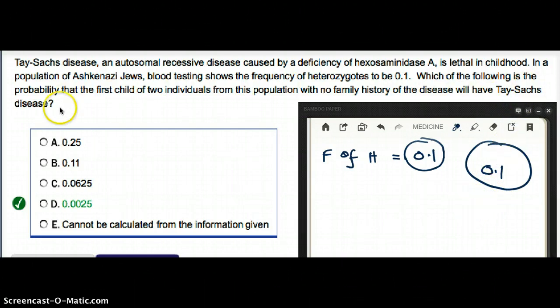Which of the following is the probability that the first child of two individuals from this population - we take two people from this population, and what are the chances of their offspring having Tay-Sachs? That's the question.